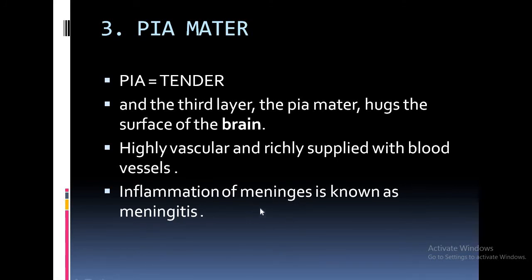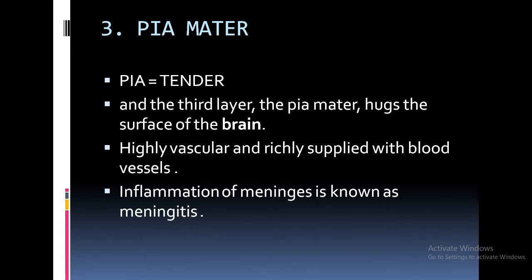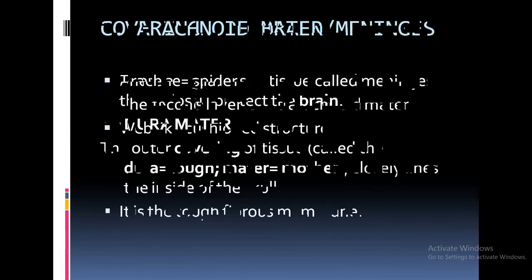The inflammation of meninges is known as meningitis. The meninges are the three coverings of the brain: dura mater, arachnoid mater, and pia mater. If there is any inflammation in any of these three layers, it is called meningitis. Do not confuse meningitis with encephalitis — the inflammation of the brain is encephalitis, while the inflammation of the meninges is meningitis. The causes of meningitis may be a virus, bacteria, or fungi.